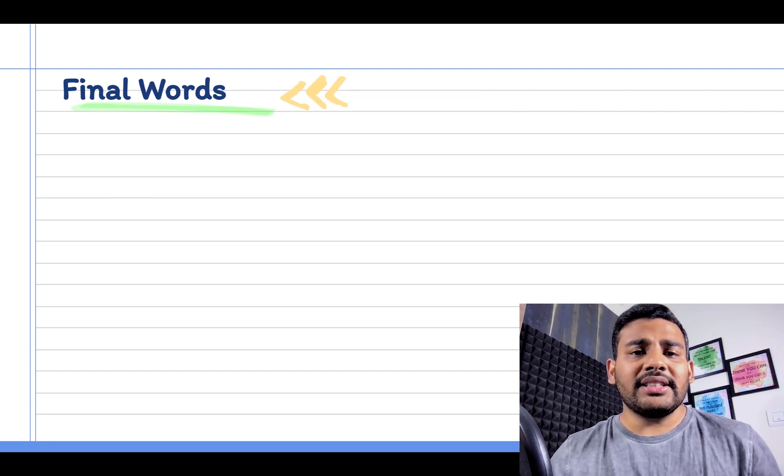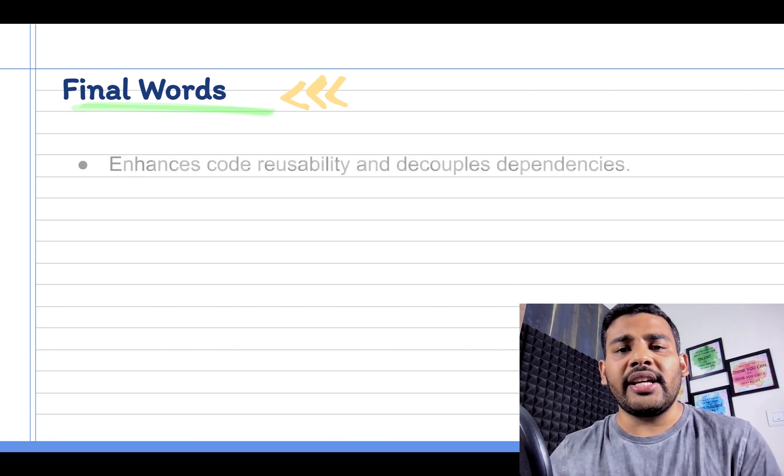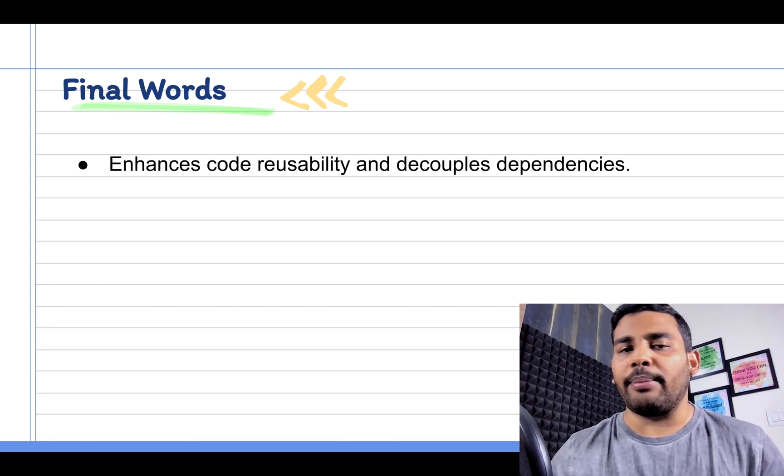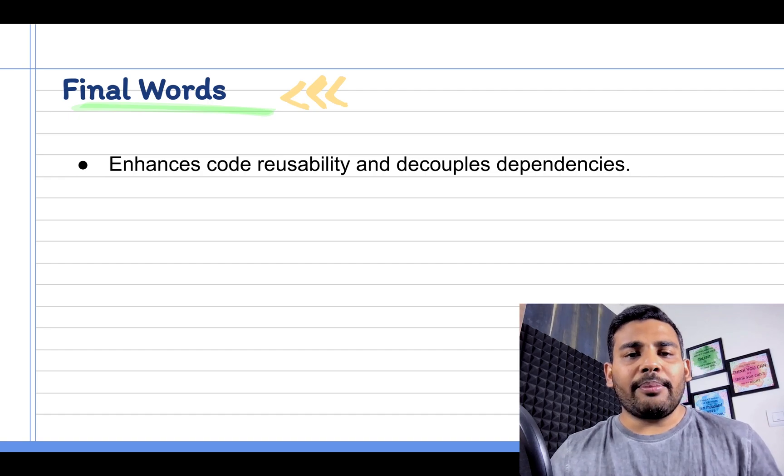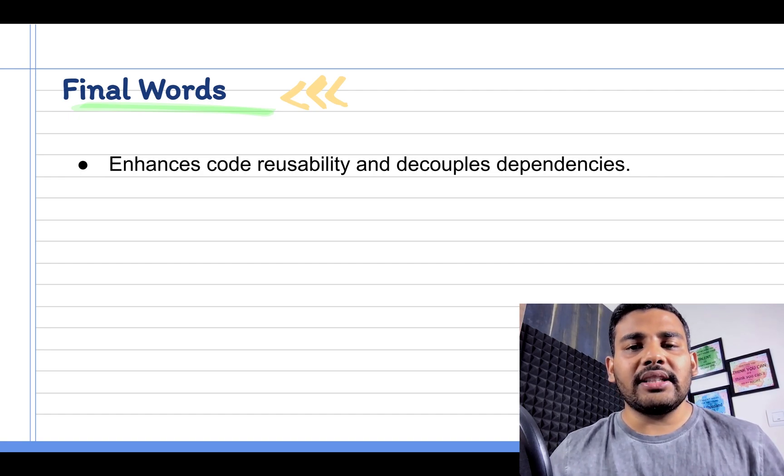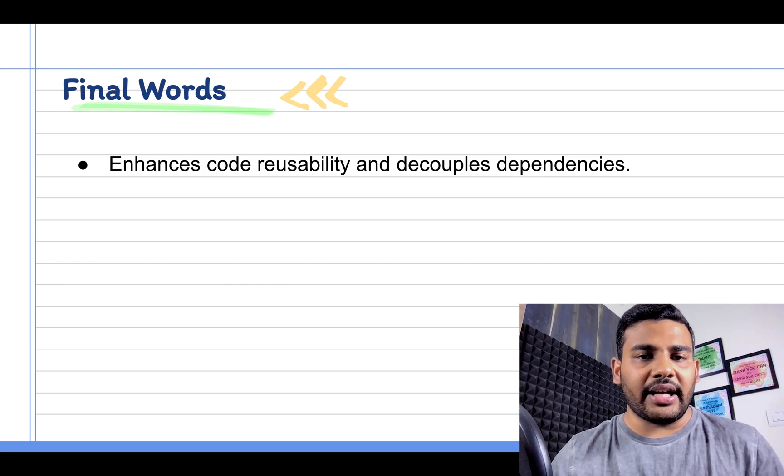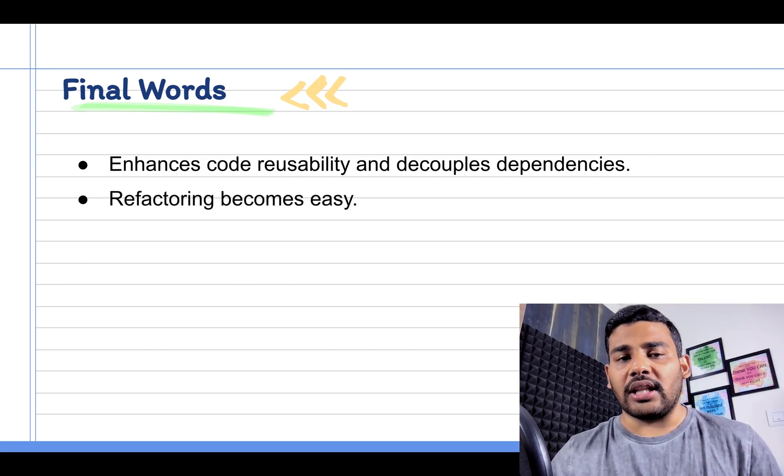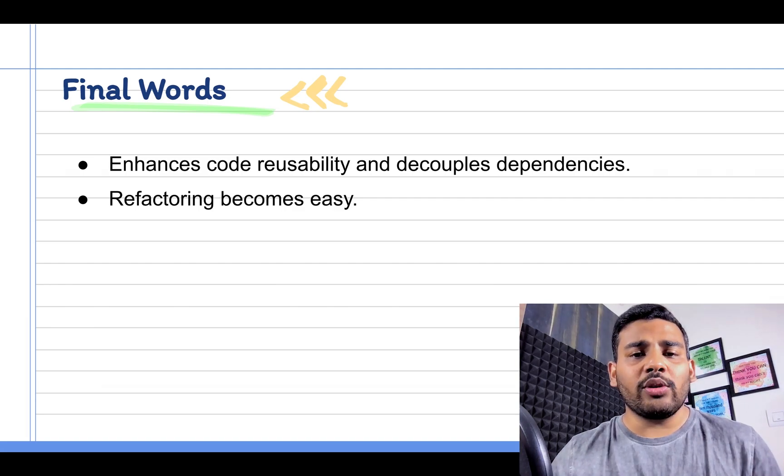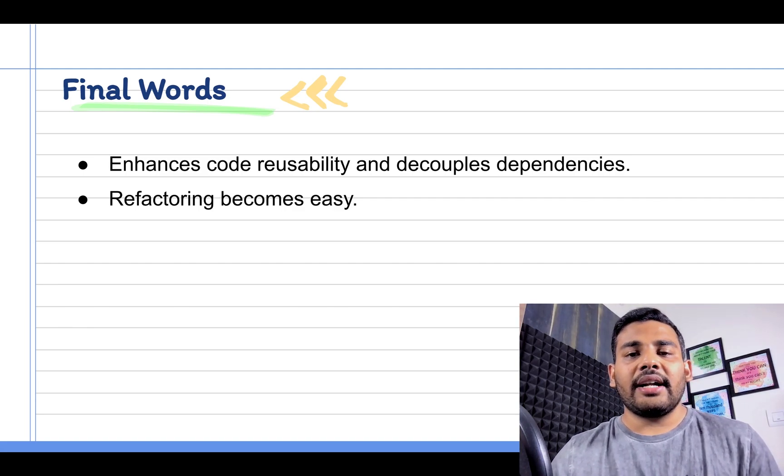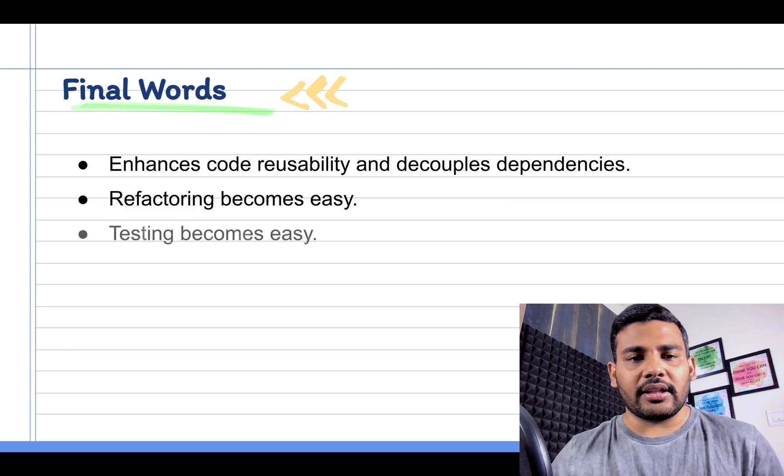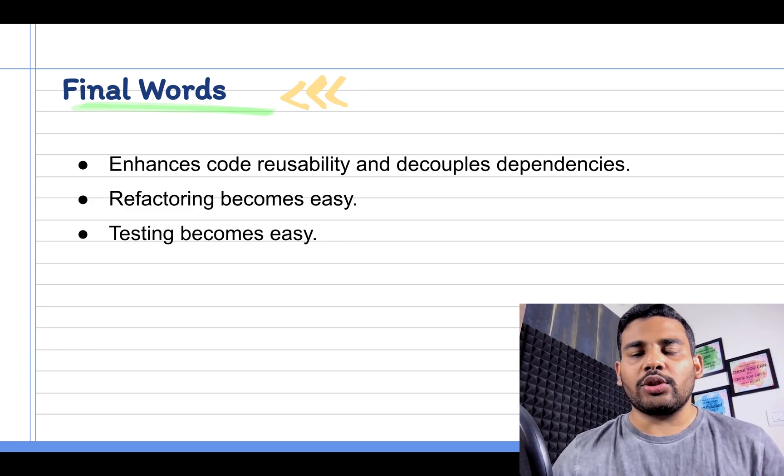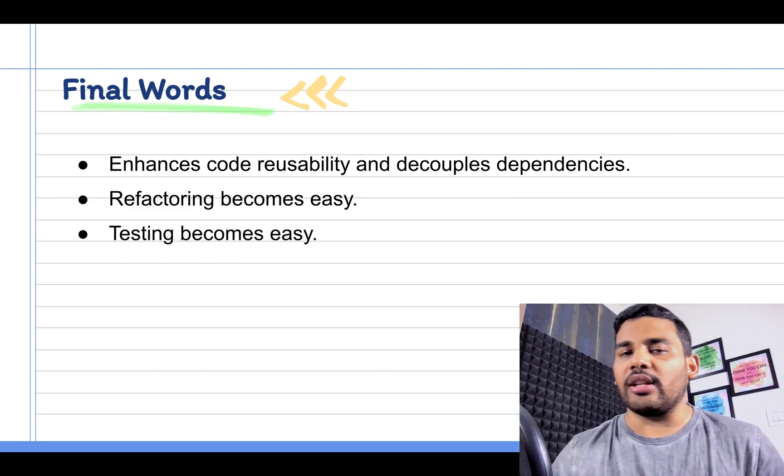So dependency injection enhances code reusability and decouples dependencies. After dependency injection, the dependencies are not hidden as implementation details, so it is easy to refactor the dependencies now, and after using dependency injection, testing also becomes easier. So these are some reasons to use dependency injection in your project.